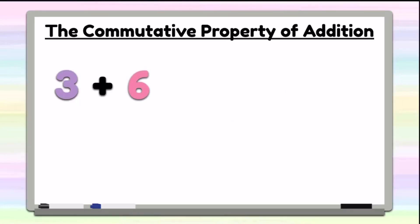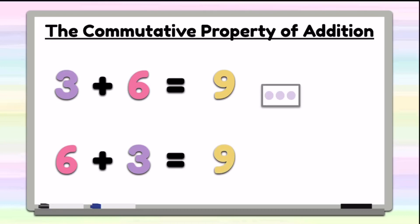3 plus 6 equals 9, so 6 plus 3 must also equal 9. Here we have 3 counters, and if we add 6 more counters, we know we have a total of 9.